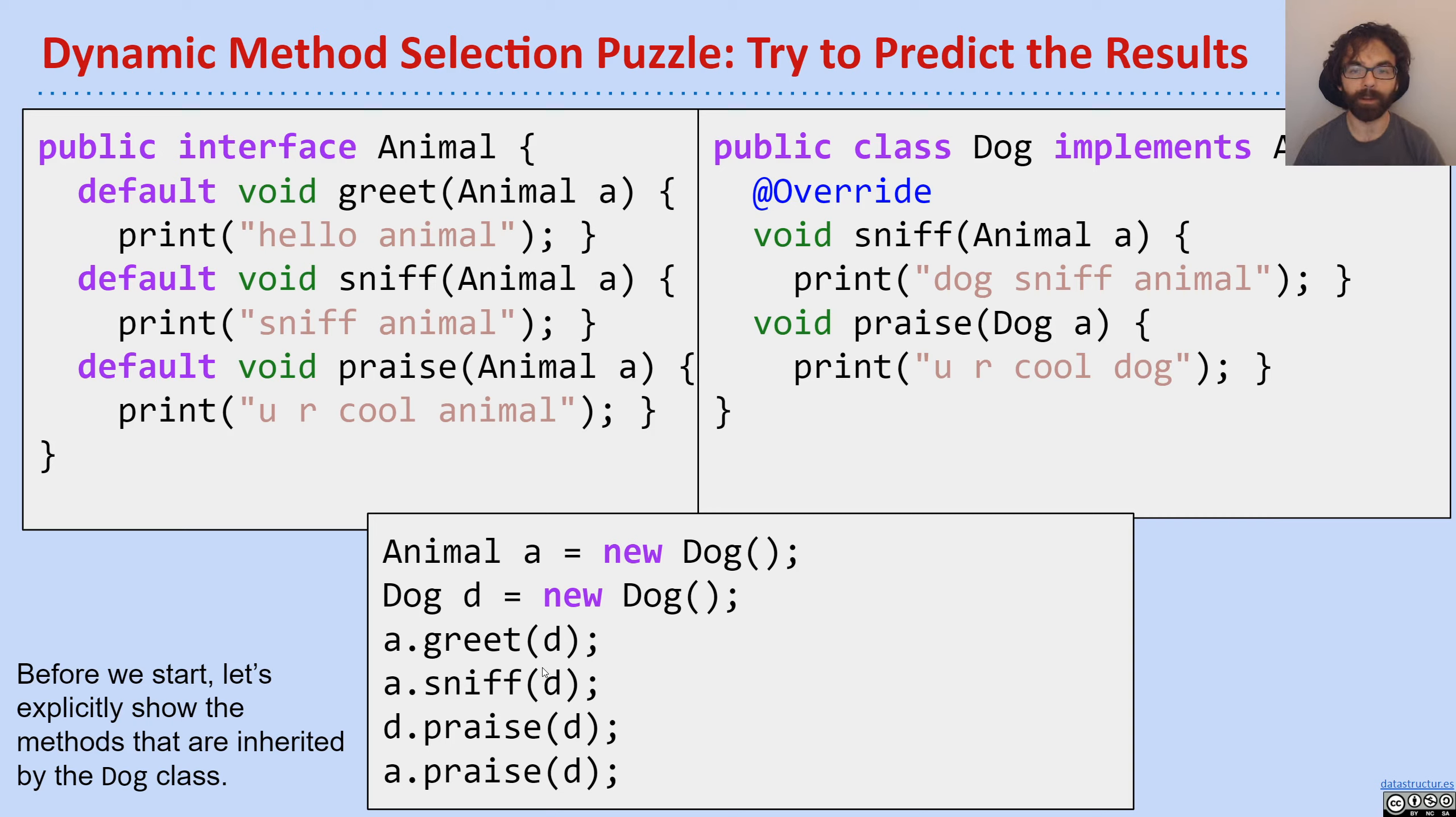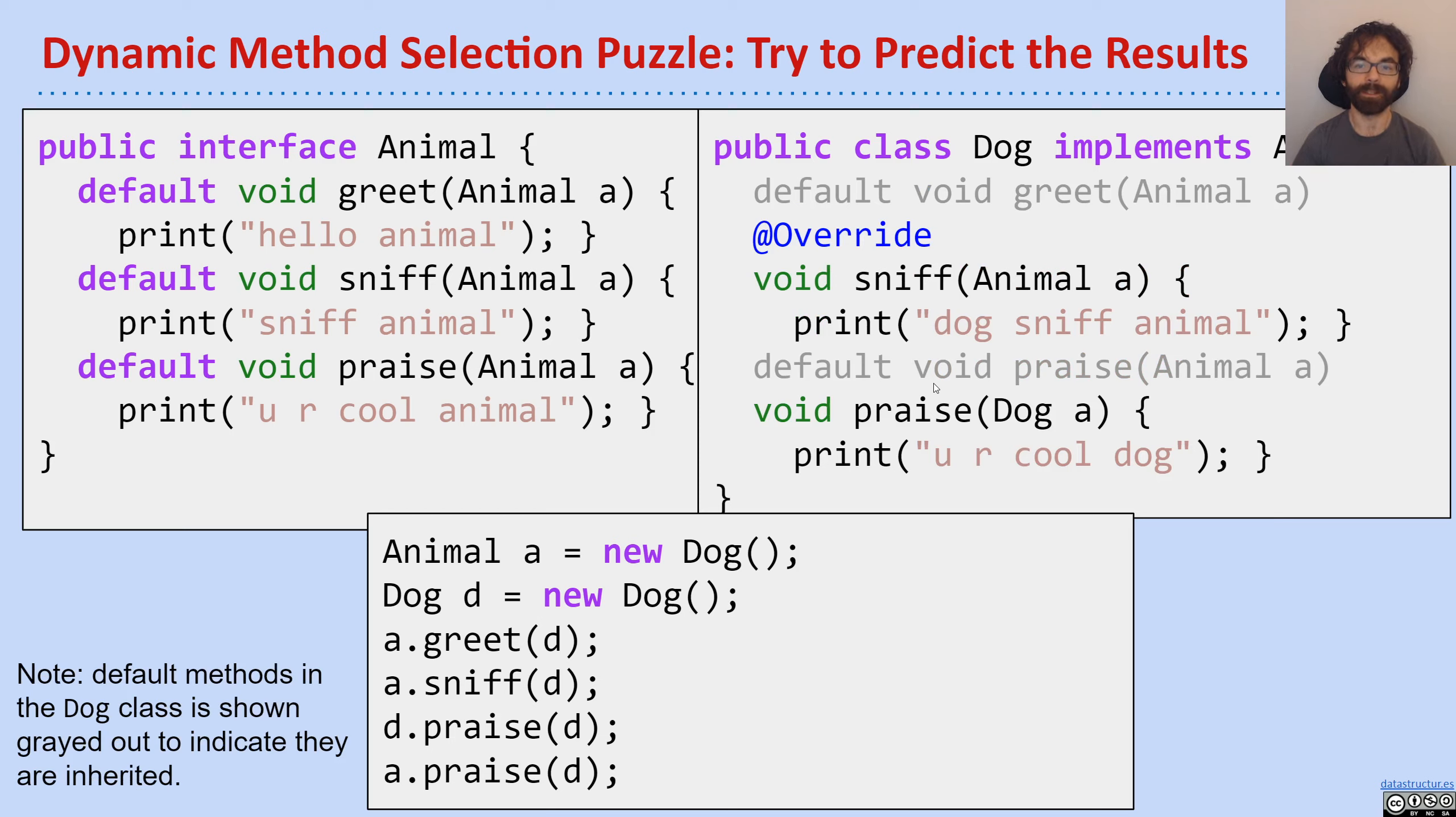Now, before you do the puzzle, I'm actually going to do one little thing, which is I'm going to explicitly show the default methods that get inherited by the Dog class, because I think it'll help guide your thinking. So even though it's going to add even more text to an already text-heavy slide, I still think it's a good idea. So once I do that, I have two default methods: greet and praise. You'll notice that the sniff method, I didn't copy the default over because it is overridden by the Dog class. Okay.